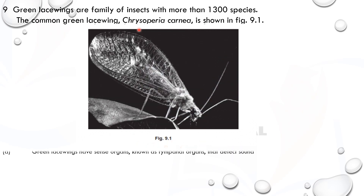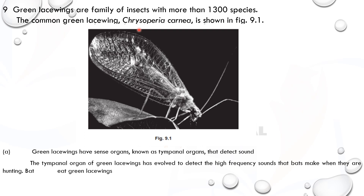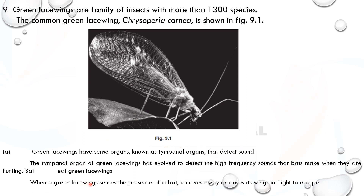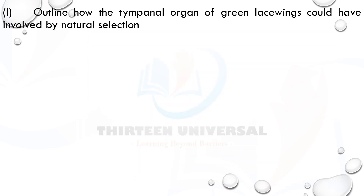Greenless wings are a family of insects with more than 1,300 species. They have sense organs known as tympanal organs that detect sound. These organs evolved to detect high-frequency sound that bats make when hunting, as bats eat greenless wings. When a greenless wing senses a bat, it moves away or closes its wings and flies to escape. How could the tympanal organ have evolved by natural selection? Pause the video and work it out.